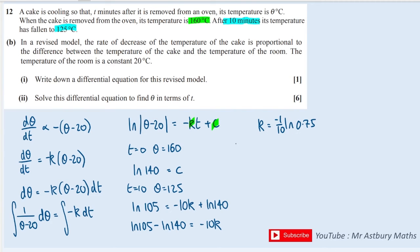I can substitute back into my original equation to get ln(θ - 20) = -k, which is going to give me 1/10 × ln(0.75) × t, and then plus ln(140).